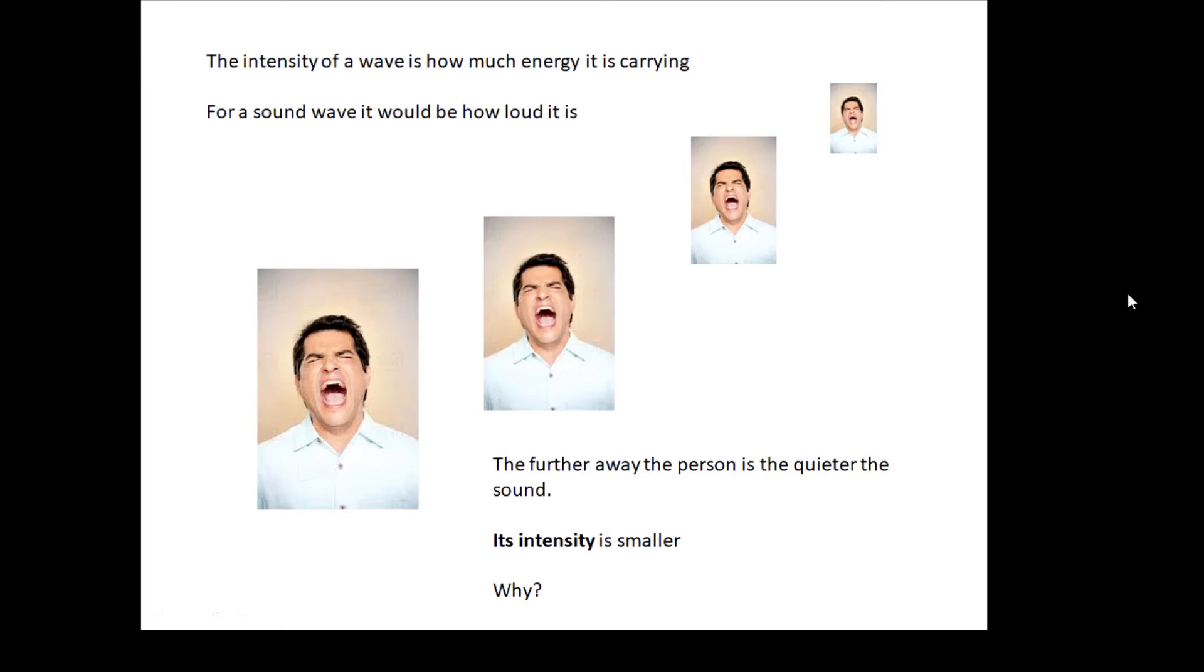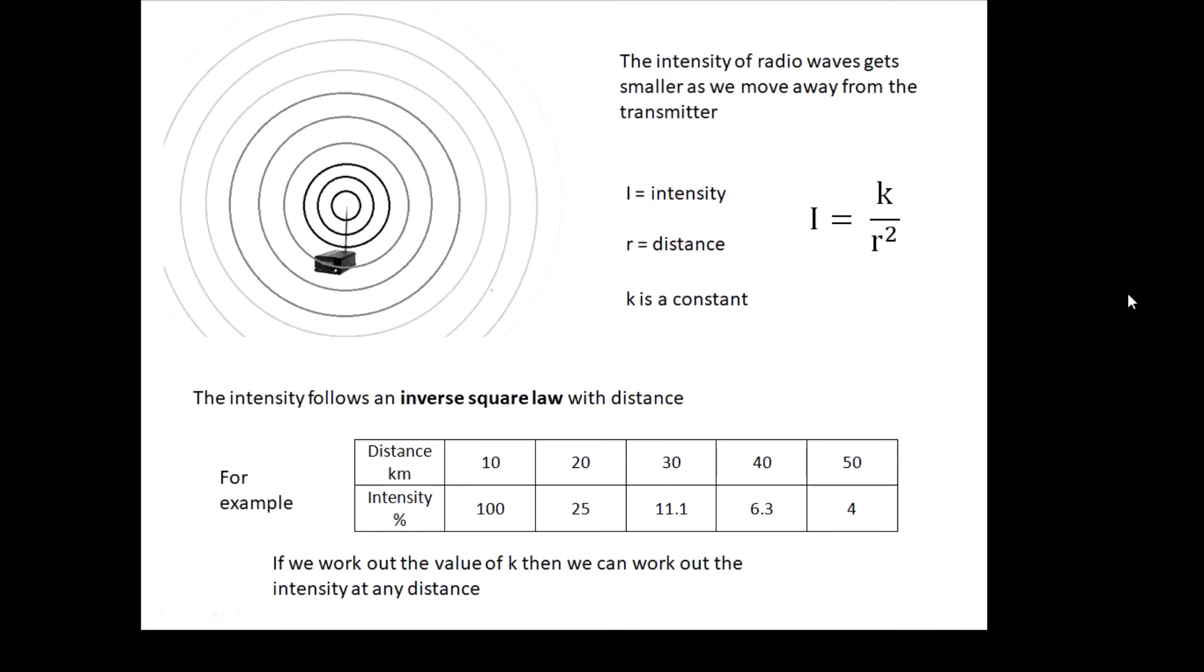Okay, now its intensity is smaller. Why is the intensity smaller? Because as a wave travels along, its energy gets spread out more and more and more. Its energy has to cover a bigger area, so its energy becomes more and more dilute. The intensity gets less and less because the energy of the wave becomes more and more spread out as it travels away.